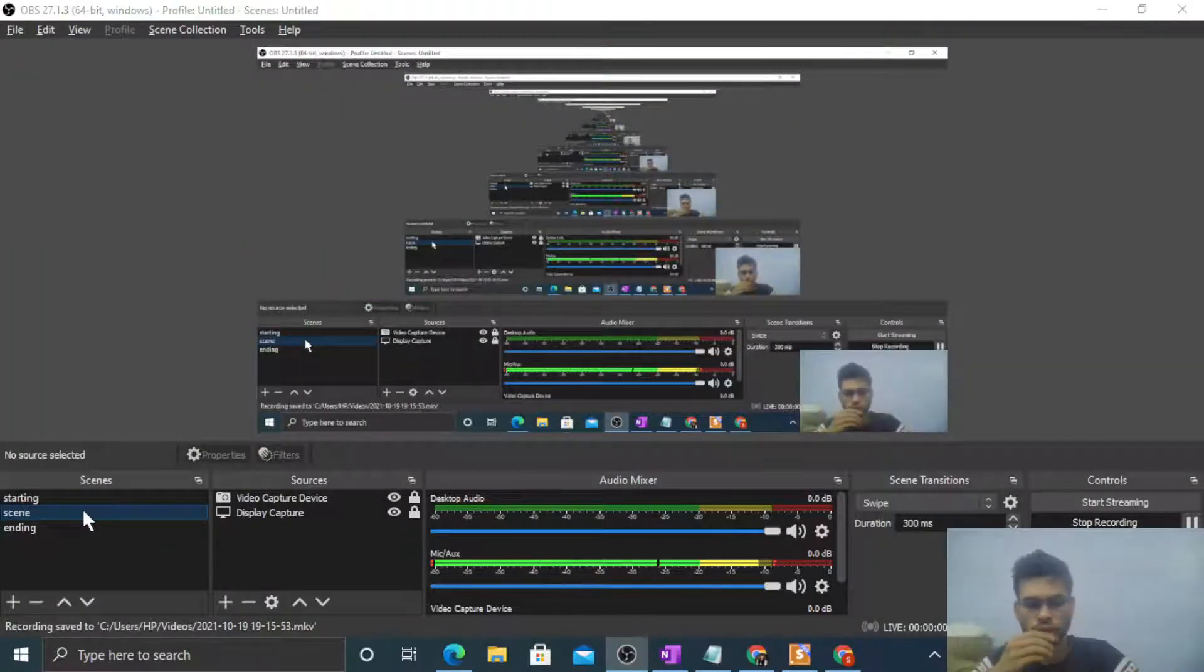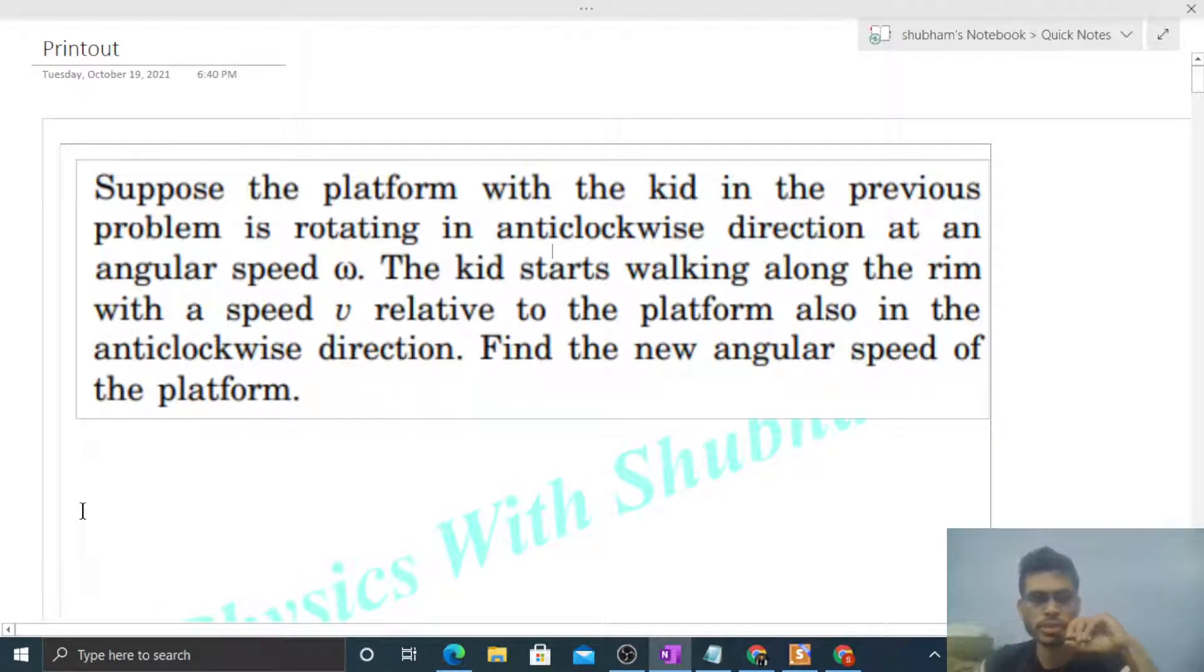Okay, hi everyone. Today let's discuss this interesting problem. It says suppose the platform with the kid in the previous problem is rotating in anticlockwise direction at an angular speed omega. The kid starts walking along the rim with a speed v relative to the platform, also in anticlockwise direction. Find the new angular speed of the platform.